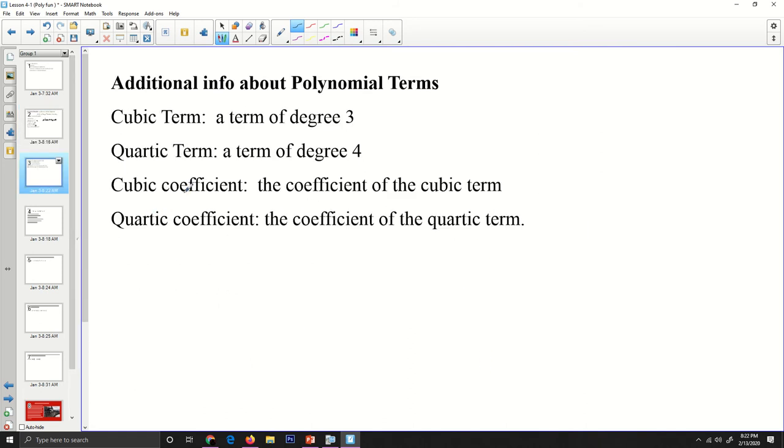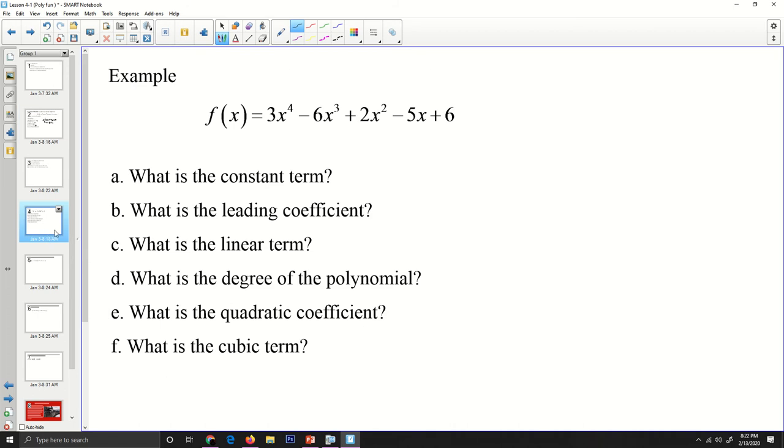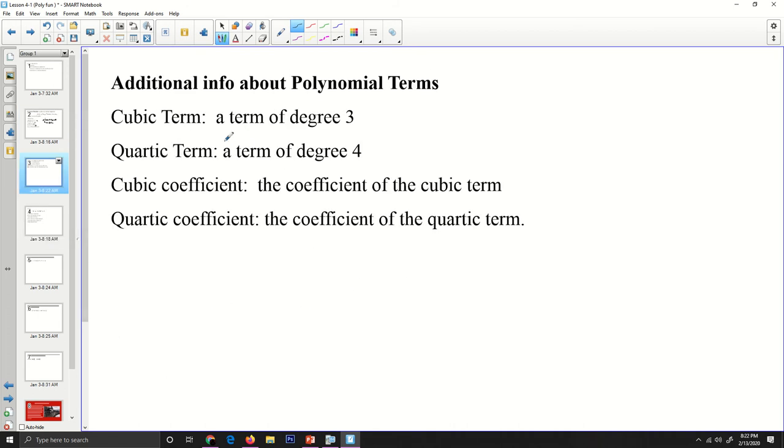some additional terms about polynomial. The cubic term is the term of degree 3. So if we go back to this example here, I can also call this a cubic function, and a term of degree 4 is the quartic term. The cubic coefficient is the coefficient of the cubic term, and the quartic coefficient is the coefficient of the quartic term.